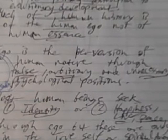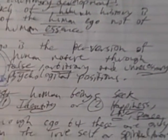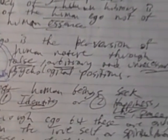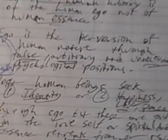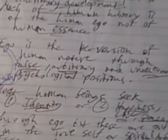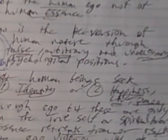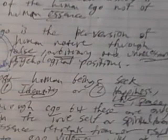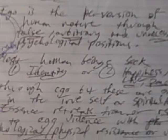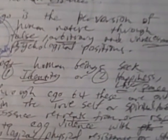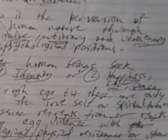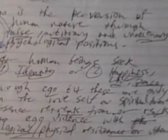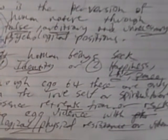Ego is a perversion of human nature through false, arbitrary, and unnecessary psychological positions. It's also maintaining a static fiction in a dynamic spiritual reality. Most human beings seek either to find their identity or to experience happiness, love, and peace through the ego. But these qualities - true identity or the true self, as well as real happiness, love, and peace - are only intrinsically, inherently in the spiritual awareness. It's impossible to find those through the ego, through any kind of psychological position. The true identity, who I really am, the true happiness, love, and peace, that's purely in spiritual awareness.